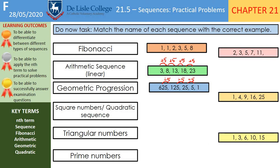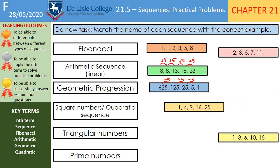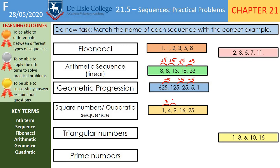Then we're looking at square numbers, which we also talked about last lesson — that means a quadratic sequence. Our square numbers are 1, 4, 9, 16, and 25. Remember, if you're asked how you know this is quadratic, you look at the first difference and notice it's not the same. Then you look at the second difference and notice that is the same — the difference between your first differences. That's when it's quadratic.